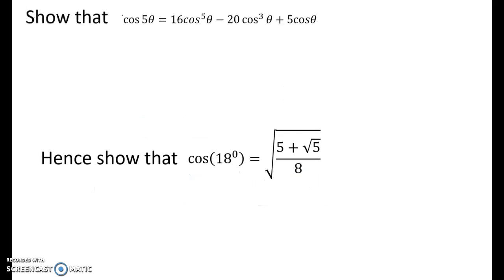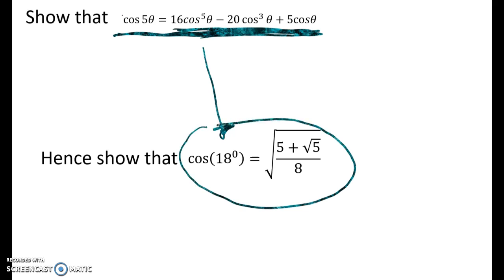Part 1 looked at this problem, which is a made up one by me. I don't think it's a scholarship question, but it could have been, to show that cos of 5 theta is equal to this thing here. So most of the hard work was in the first half of the problem. We're going to use that result now to show that cos of 18 is equal to this thing here.